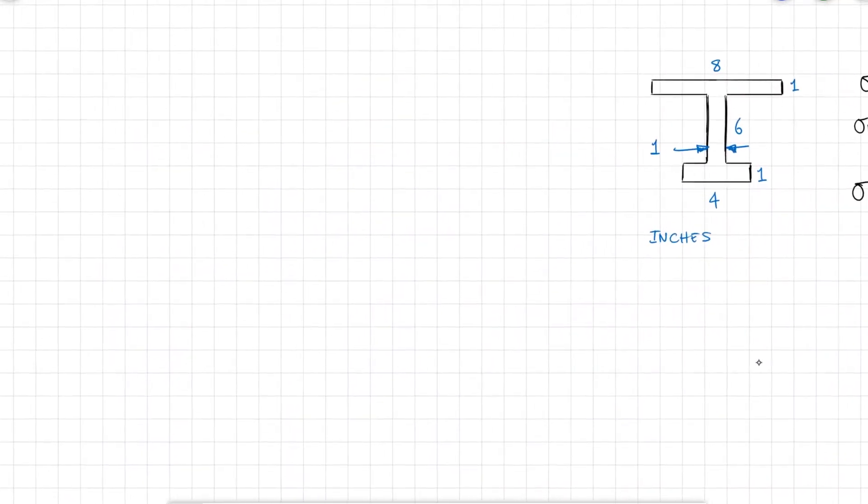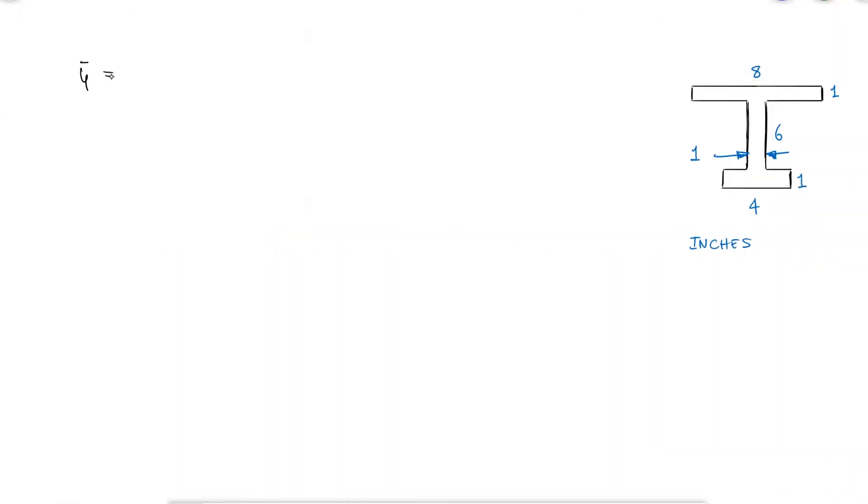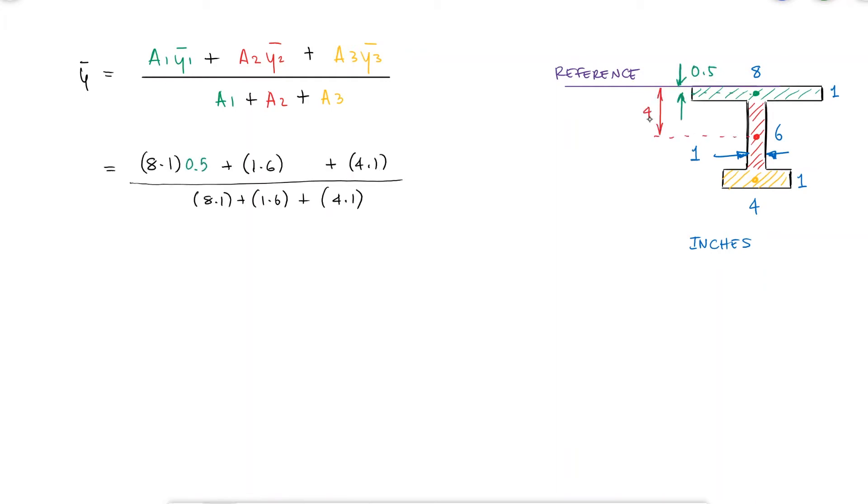The centroid of my cross section area will show me where the neutral axis is located, and let's use the top surface for reference to change things up a bit. The distance from my reference to the three centroids will be 0.5, 4, and 7.5.